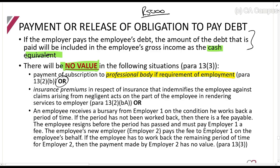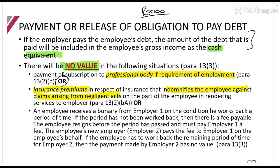Or if it's an insurance premium that the employer pays that indemnifies the employee against claims arising from negligent acts. So you work as an audit partner at a firm and you have to take out professional indemnity insurance so that if something goes wrong and you get sued, there's insurance to cover that. If your employer pays that because it relates to the services you perform as a partner, then that will not constitute a fringe benefit either.